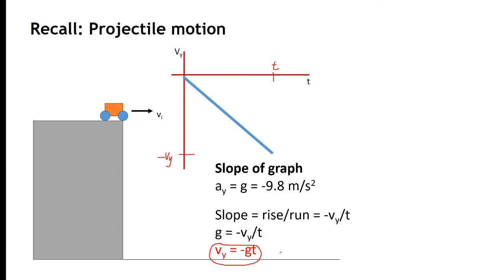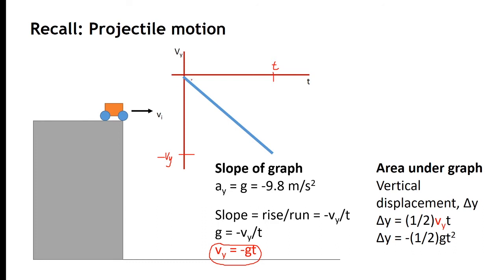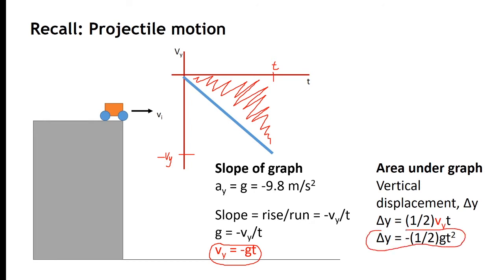The area of this graph forms the shape of a triangle. The area of a triangle is one-half base times height, so we have one-half Vy times T. Our Vy is negative Gt, which is the result we got earlier. Combining that with the equation for displacement, we now have another equation for the displacement — in this case, the vertical displacement: negative one-half Gt squared.